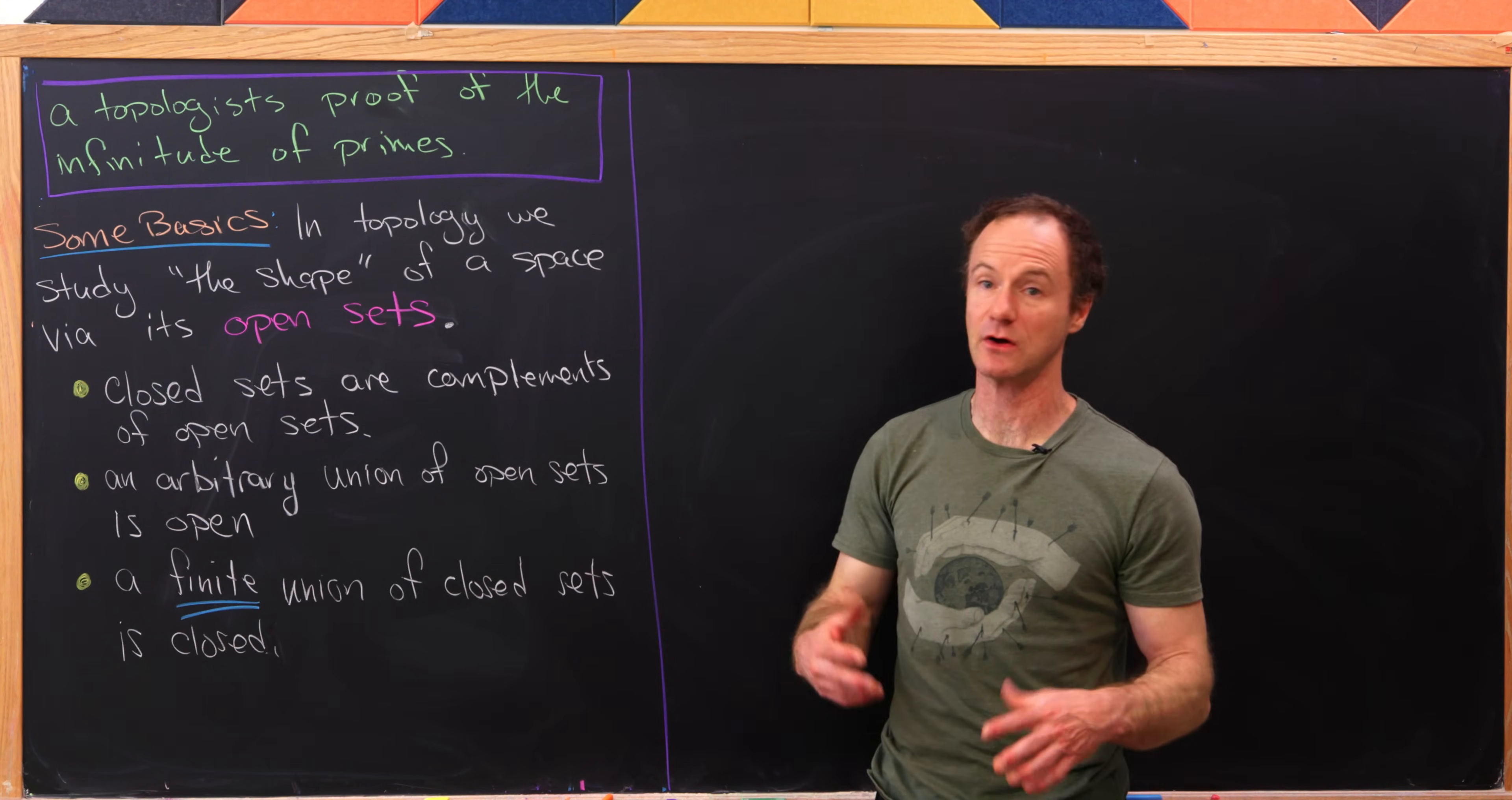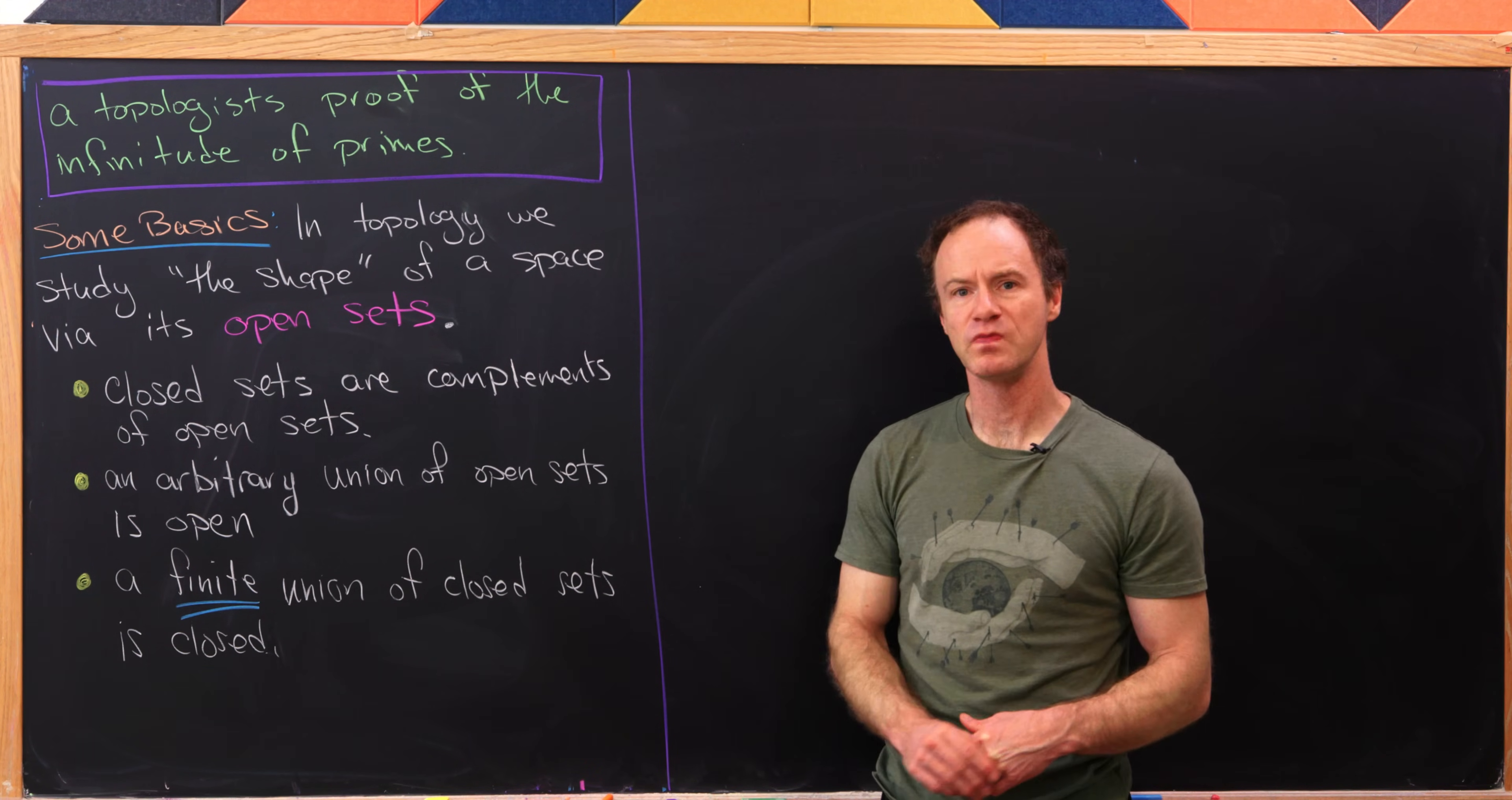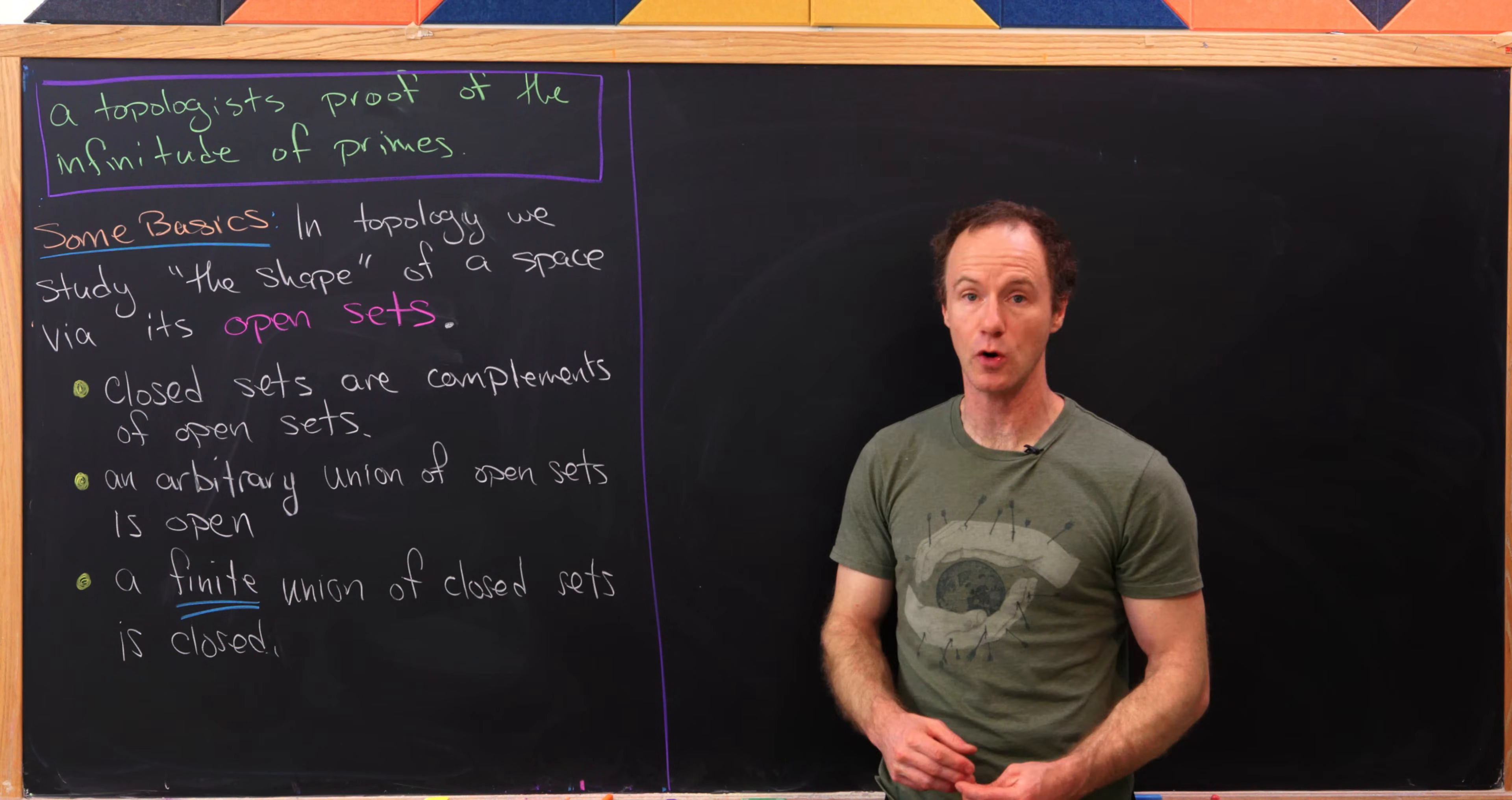Some other notions that build off of this are closed sets. So closed sets are merely complements of open sets. And then we have two very important facts. And that is, an arbitrary union of open sets is open.